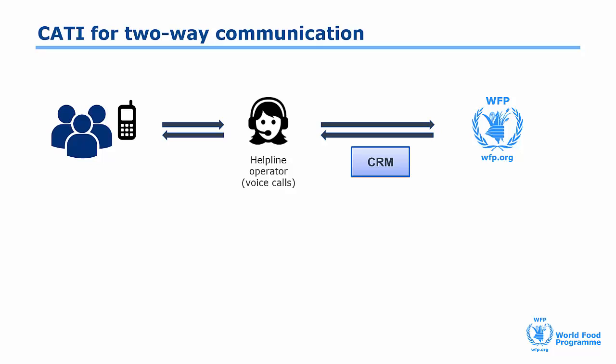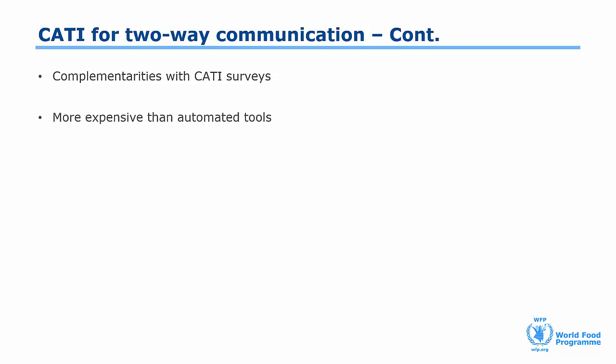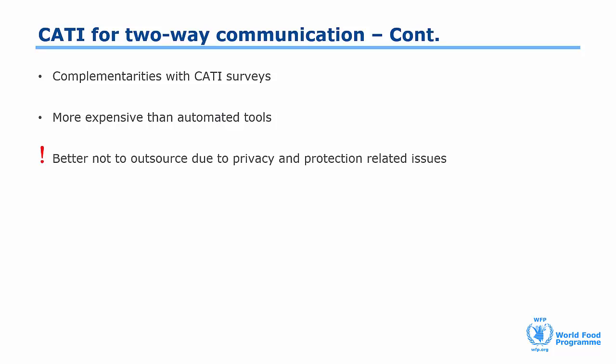So when would you want to set up a two-way communication using CATI? If you already have or are planning to have operators in-house for remote data collection, the same operators can manage both incoming and outgoing calls. However, this system is more expensive than automated tools as it requires you to hire dedicated full-time operators. The size of the team depends on the volume of outgoing and incoming calls. A CATI-based two-way communication system should not be outsourced to an external service provider due to privacy and protection related issues.